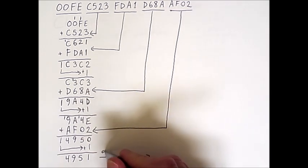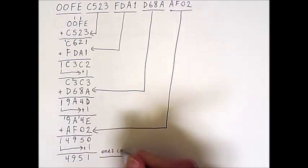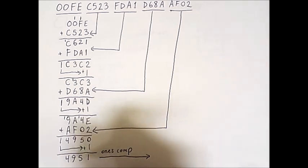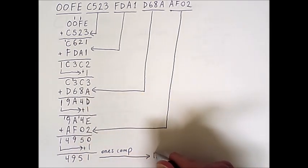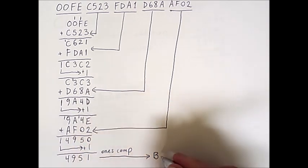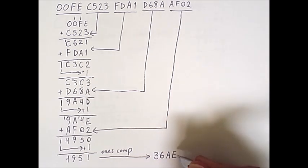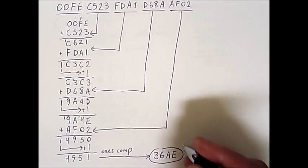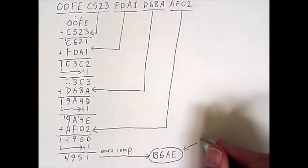To get the checksum, we do a 1's complement operation on this sum. And the result of that will be our final result. Now to do 1's complement on a hex value, we subtract each of the digits from 15. So see how we have 15-4 is b, which is 11, 15-9 is 6, 15-5 is 10, which is a, and then 15-1 is e, which is 14. And so that is our actual checksum.